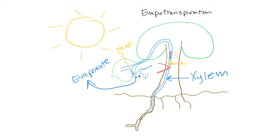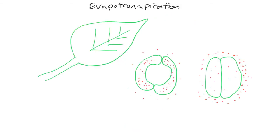That's how water moves through a plant. Some other problems a plant might have: if it's too hot and there's not enough water, the plant will lose water to the point where it can no longer maintain a continuous string of water, and it will wilt and die. One way it can control that is through its stomata. The stomata are made of guard cells.